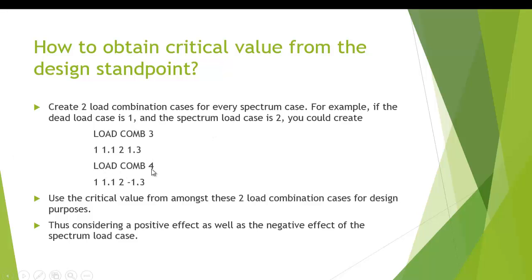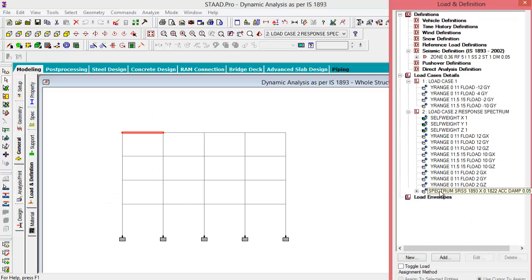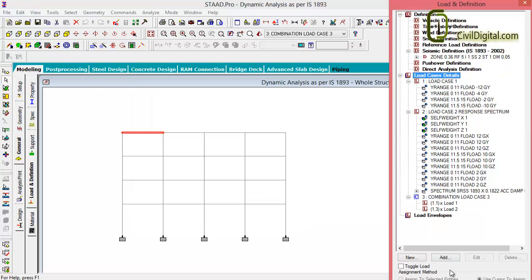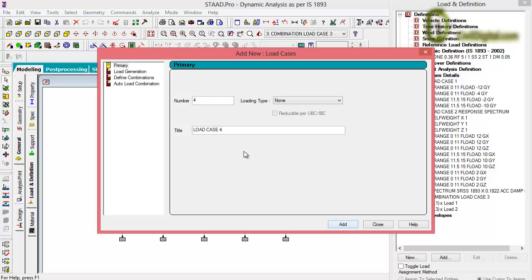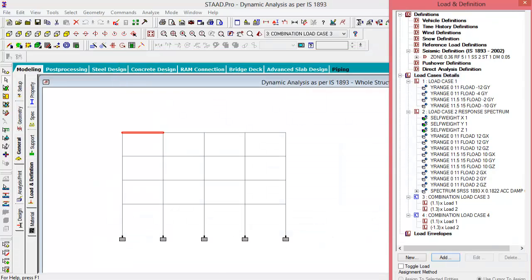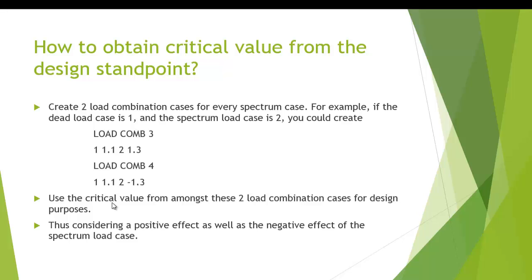Switching back to our example, we will define a load combination case with a factor of 1.1 and response reduction load case with a factor of 1.3 and click add. Again, we will add another load case number 4 with a factor of 1.1 for the dead and live loads and a factor of minus 1.3 for the response spectrum case. We have to use the critical value amongst the two load combinations that we have defined, thus considering the positive effect as well as the negative effect of the spectrum load case.